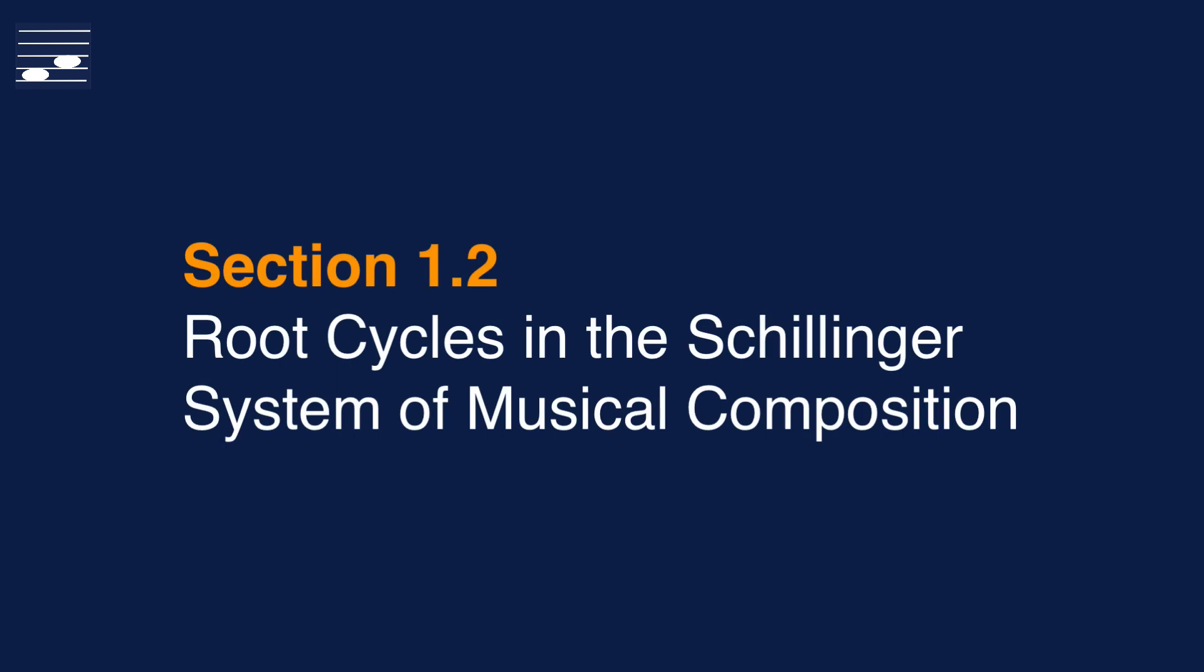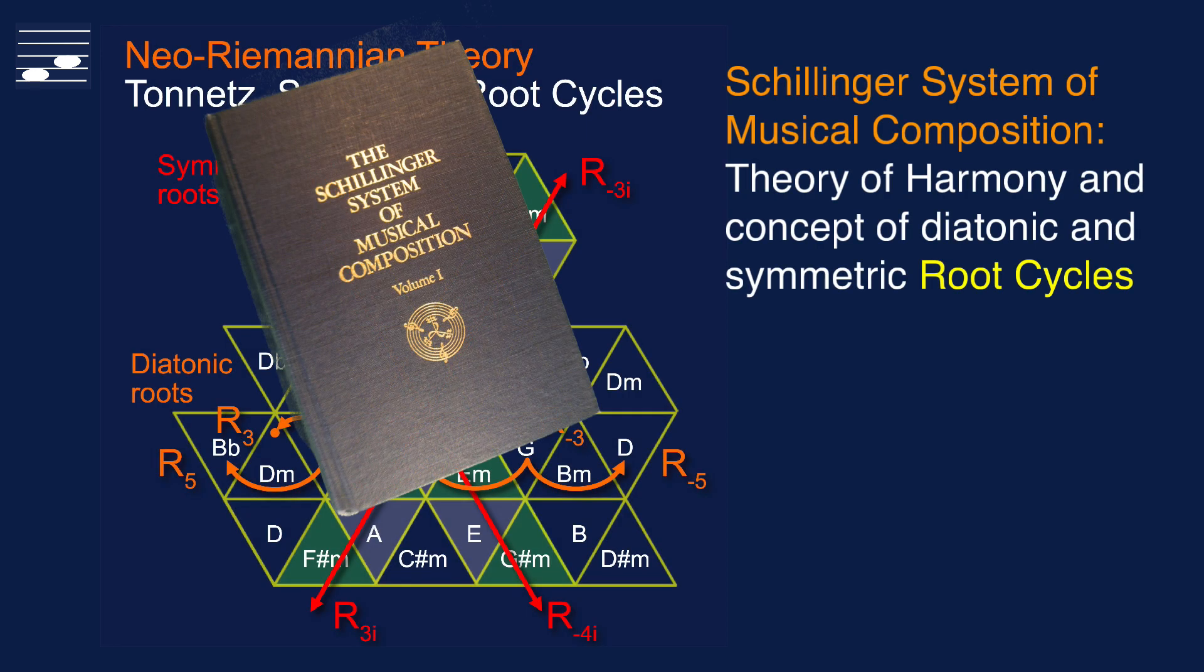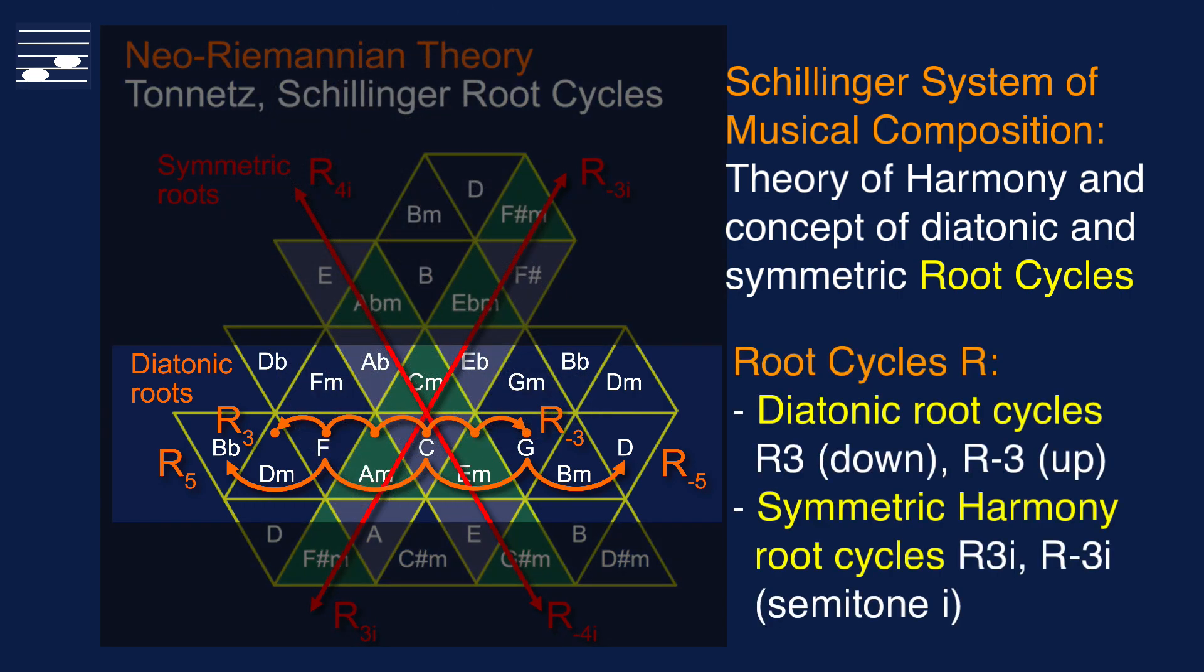This tutorial series combines Neo-Riemannian theory with the root cycle concept from the Schillinger system of musical composition in either the diatonic or symmetric harmony system. The Tornetz diagram shows the diatonic root cycles in orange,